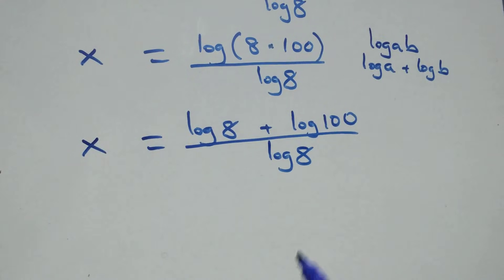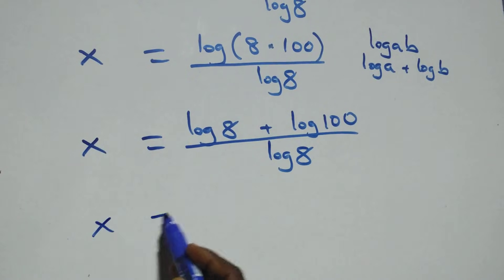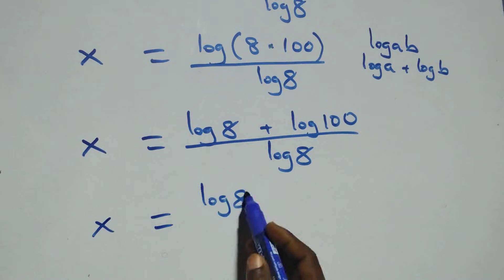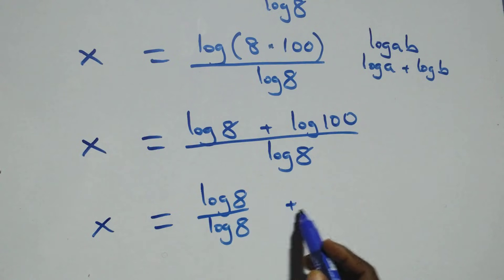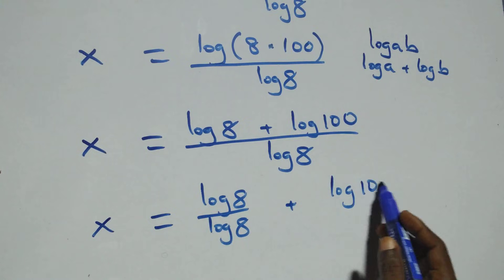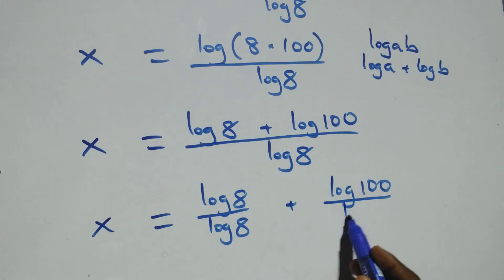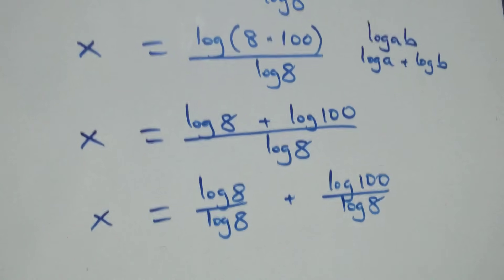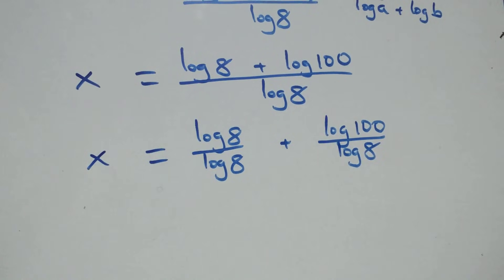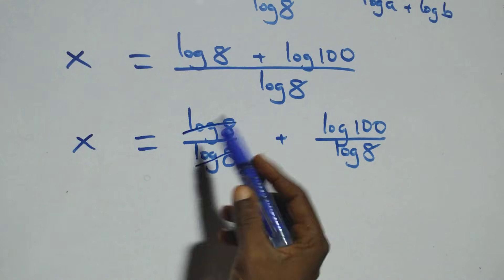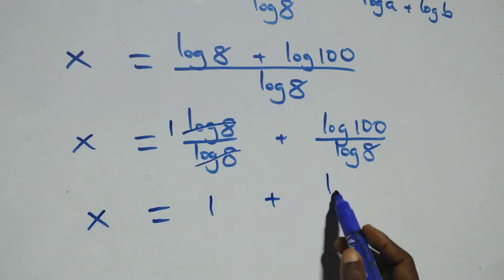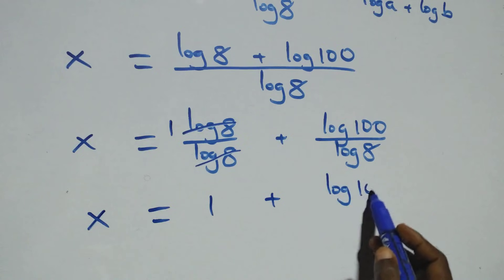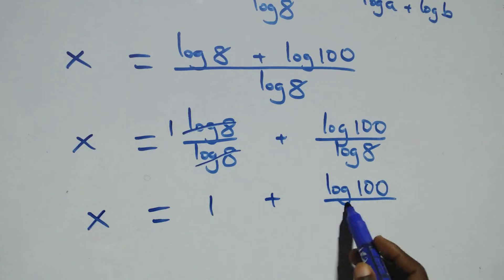Next step, we separate this into two fractions. We have x equals to log 8 over log 8 plus log 100 over log 8. Then log 8 cancels each other on the first fraction, which implies x equals to 1 plus log 100 over log 8.